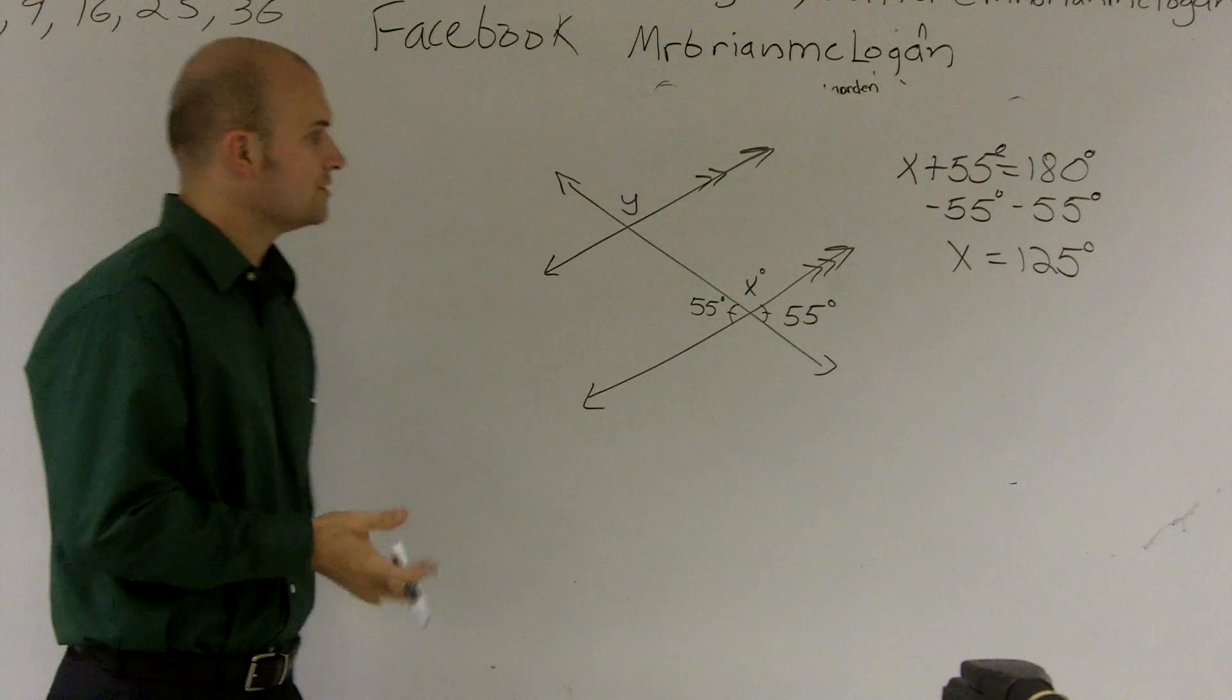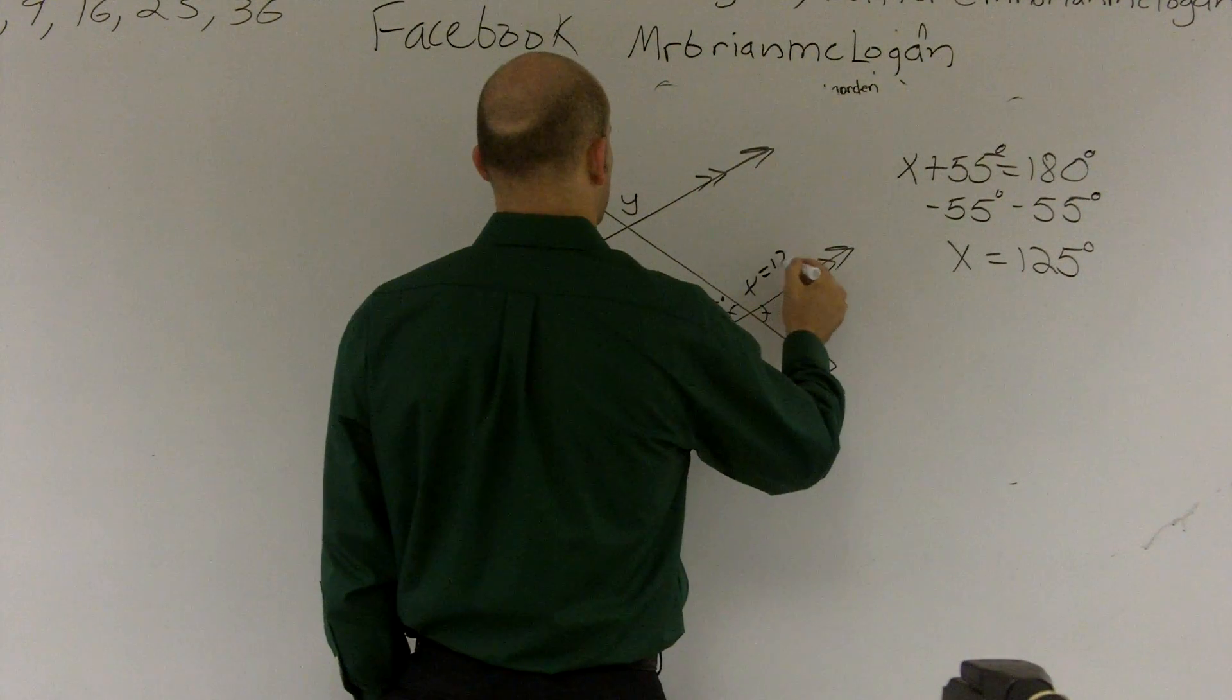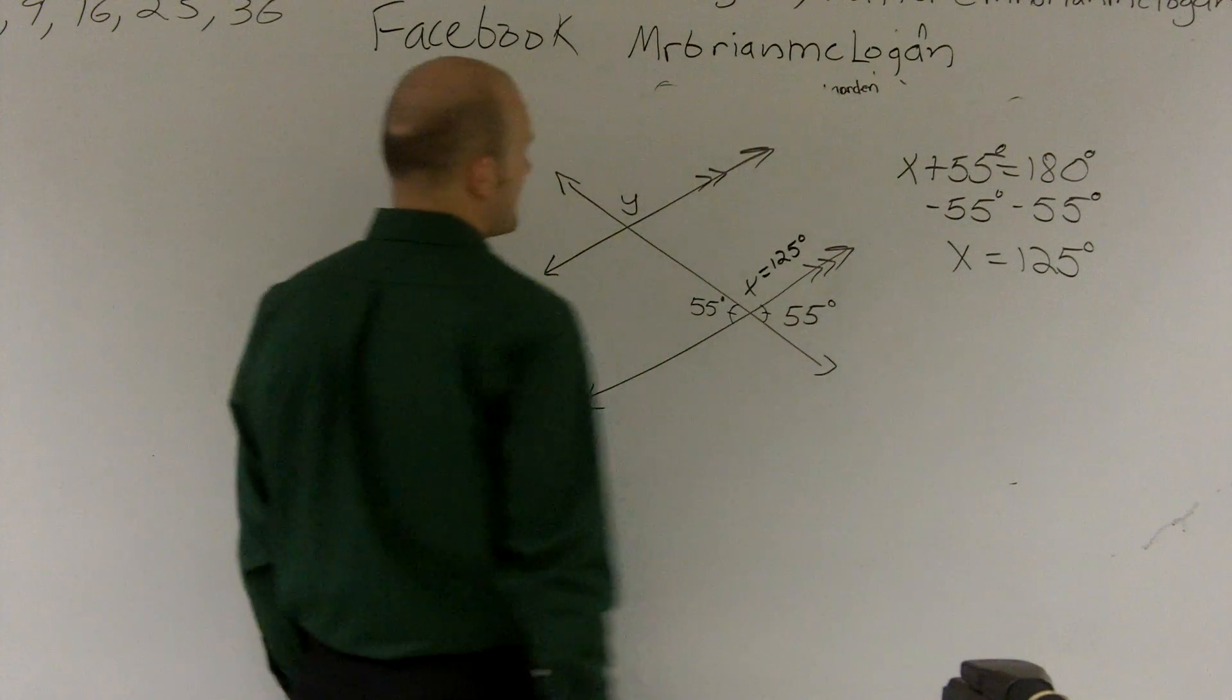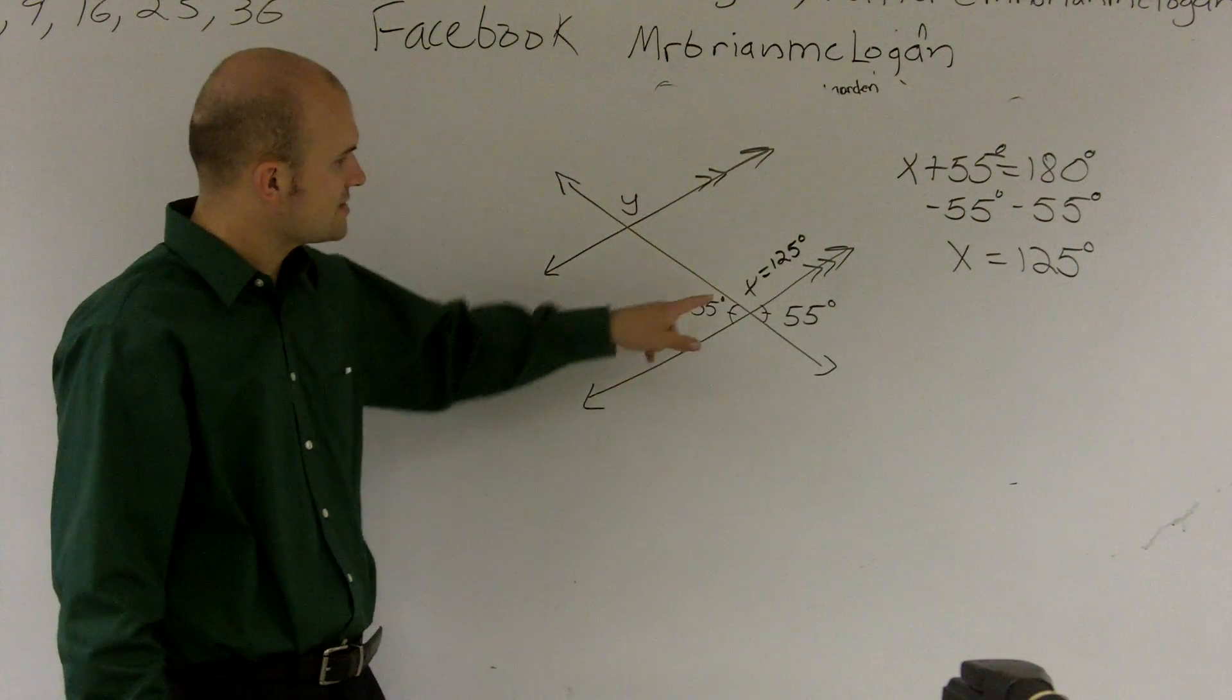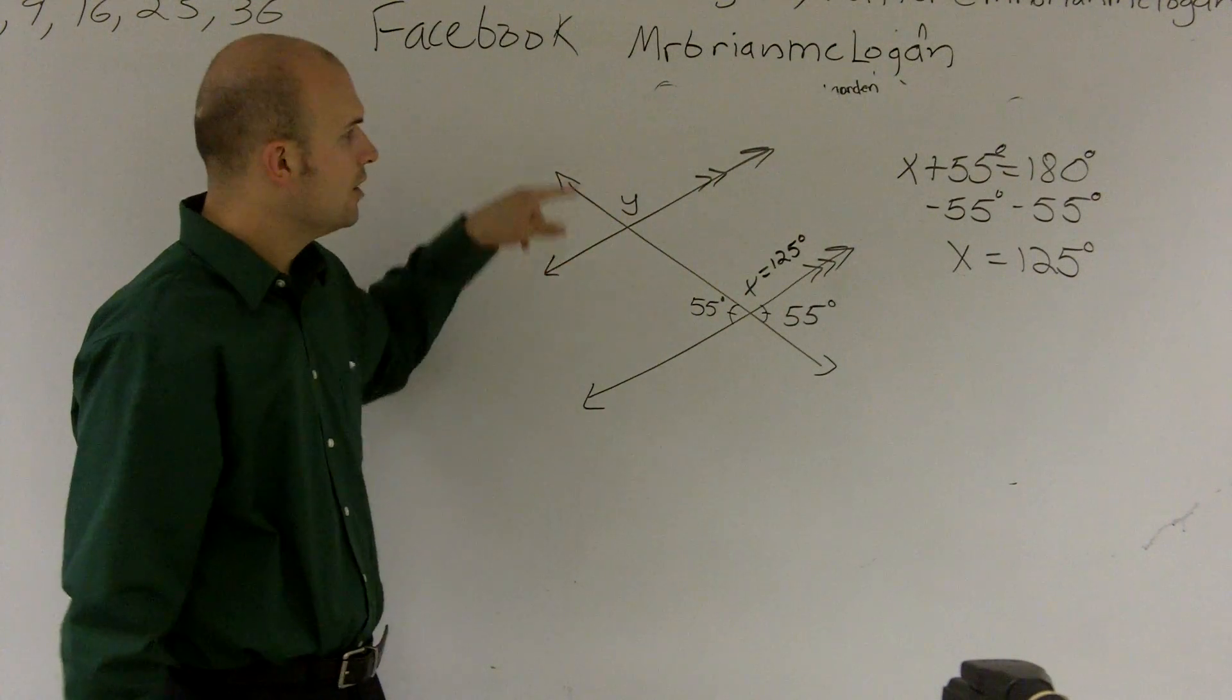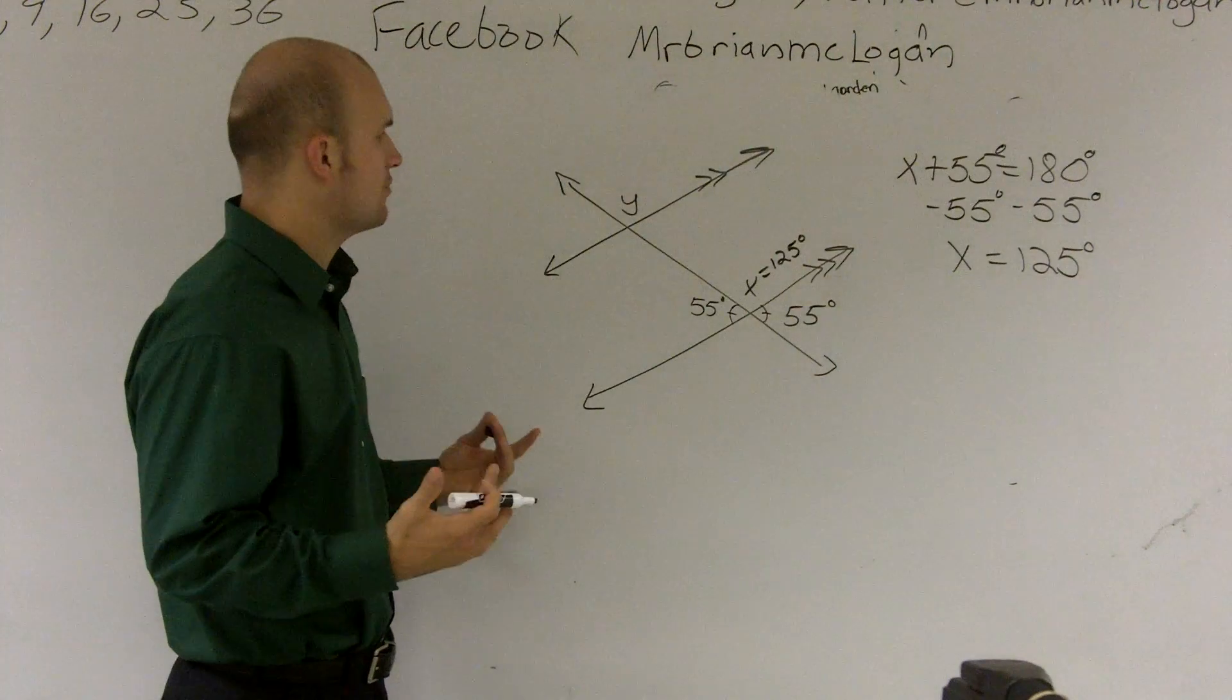Now, the next thing that we're going to learn for this problem is now that I can say that x equals 125 degrees. So the important part about this problem is what you notice is how are x and y related. Well, x and y are related by what we call corresponding angles.